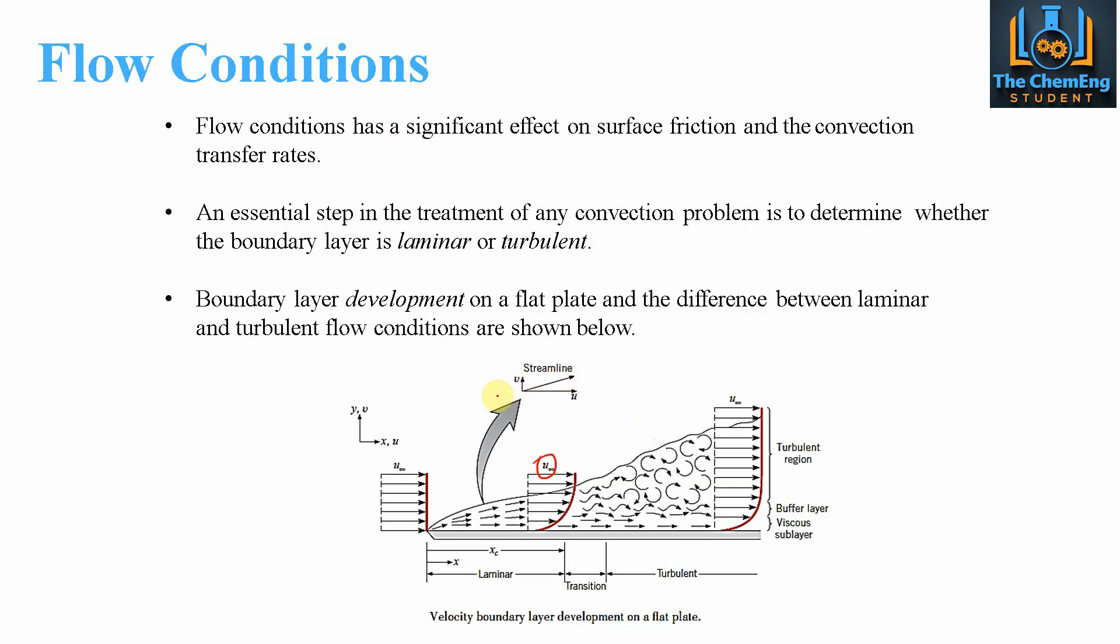The boundary layer development on the flat plate between the laminar and turbulent flow can be seen here. U infinity is the velocity of the fluid away from the plate. As we travel further away from the plate, we tend towards U infinity, meaning the velocity is constant. Right at the plate, from this point to about here, we have the laminar region.